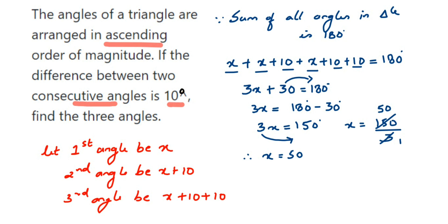So the first angle is 50°. The second angle, x plus 10, is 50 plus 10 which equals 60°. The third angle, x plus 10 plus 10, is 50 plus 10 plus 10 which equals 70°. You can verify: 50 plus 60 plus 70 equals 180 degrees, confirming the answer is correct. The three angles of the triangle are 50°, 60°, and 70°.